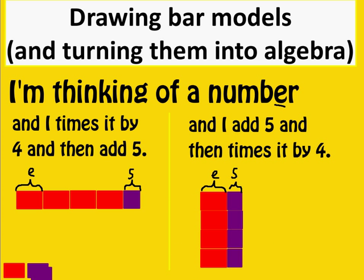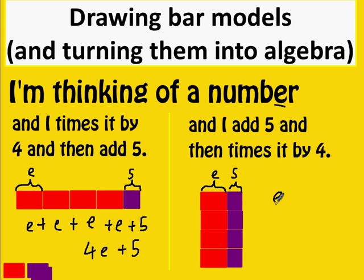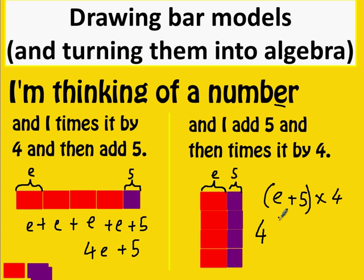Subtle but important difference between the two examples. The first gives E + E + E + E + 5, shortened to 4E + 5. The second: we've got E + 5 to start with, and then we times that by 4 — so I write it as (E + 5) × 4, or in preferred algebraic form with the 4 first: 4(E + 5). Notice I didn't write a multiplication sign between them — in algebra, placing a number next to brackets implies multiplication.